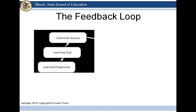The learning progressions describe a pathway of learning for students and teachers. Explicit learning progressions can assist teachers to plan their instruction and formative assessments. Learning goals and success criteria drive the formative assessment process. The success criteria are checks on learning that the student can use as they monitor their own learning.